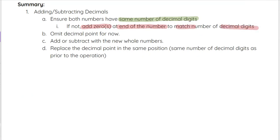We can omit or ignore the decimal point for now, and then we go ahead and add or subtract with the new whole numbers. At the end, we replace the decimal point, so again, we're going to put the decimal point back in our answer in the same position as where it started, so the same number of decimal digits as prior to the operation. And that is our process for adding or subtracting decimals.